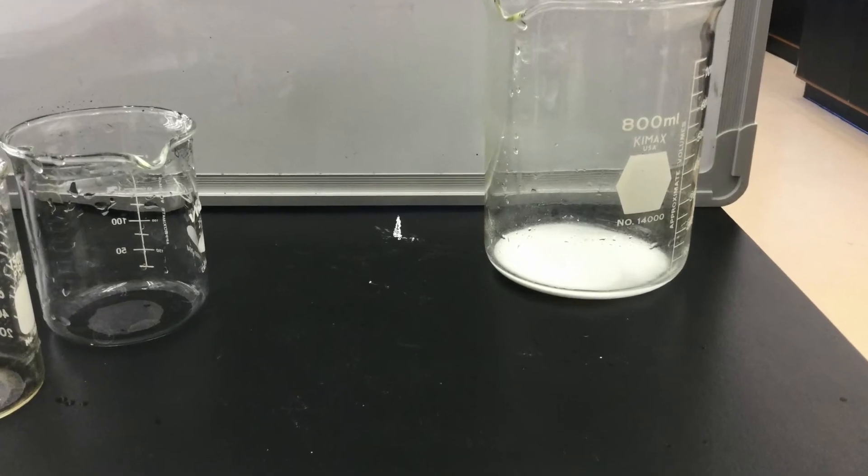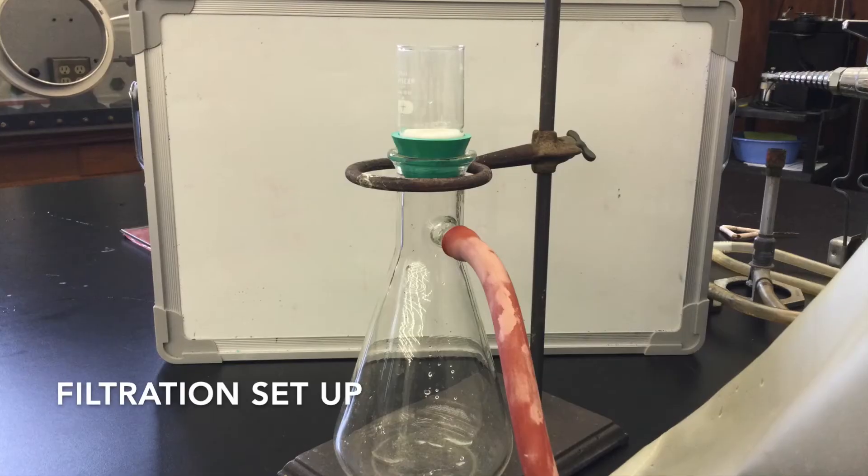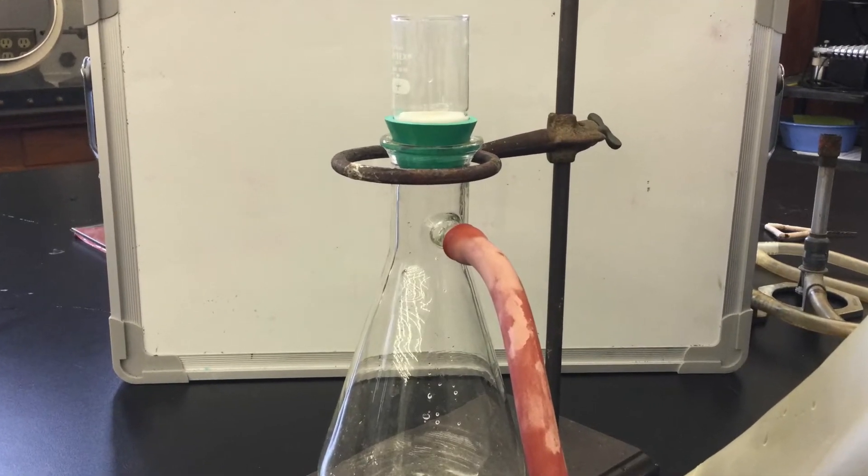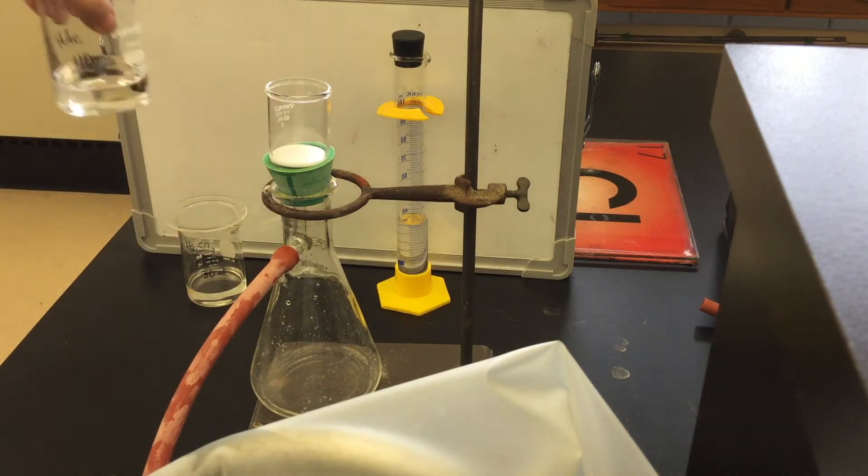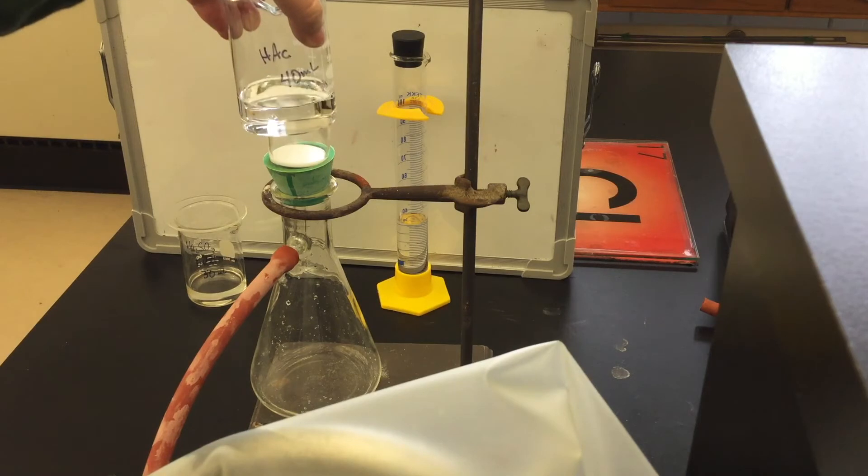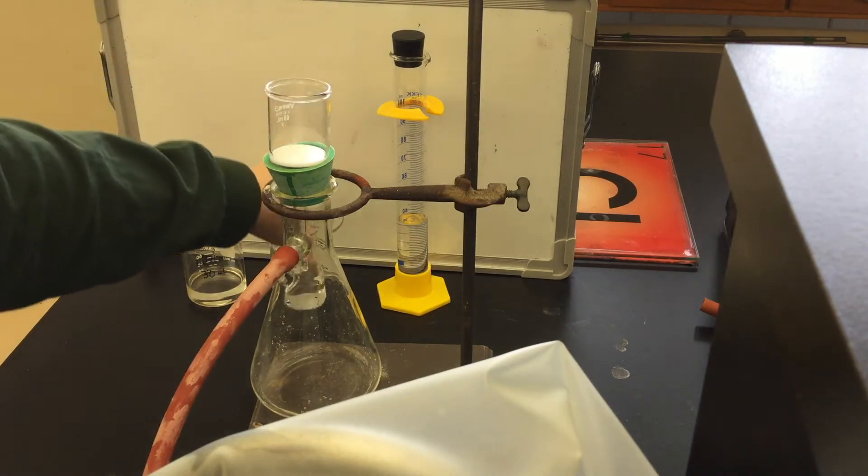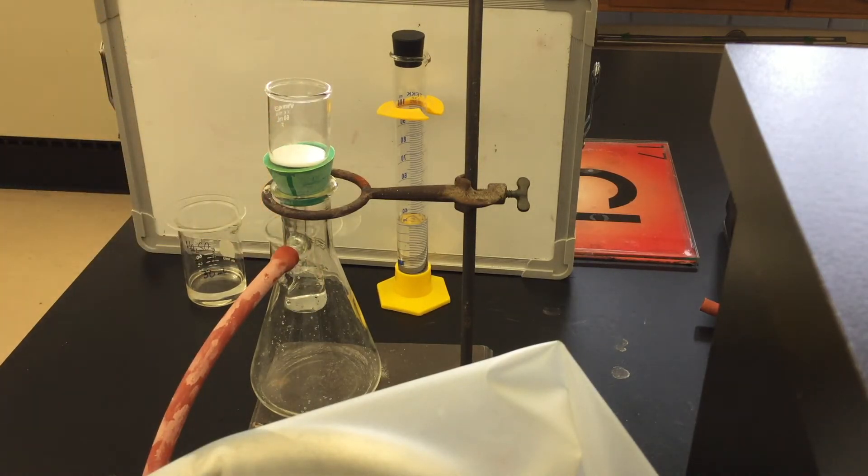You can decant the supernatant fluid into the sink. Before you begin filtration, have your rinses ready to go. It's fine to have all of the 10 milliliter portions in one container, so I have 30 milliliters of ethanol in the first beaker, and then I have 40 milliliters of acetic acid in the second. And then I've left the ether in the graduated cylinder, and I've capped it so that it doesn't evaporate because it's very volatile.